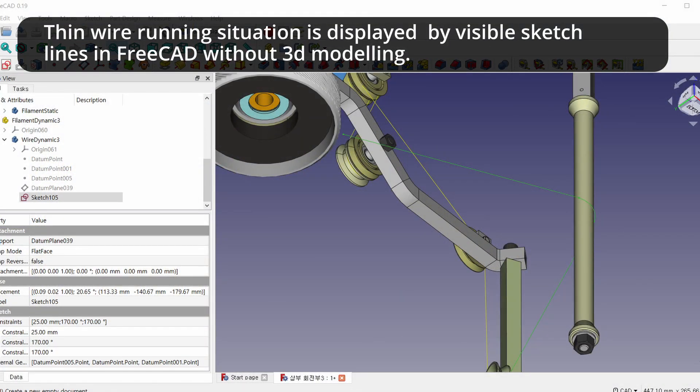Thin wire running situation is displayed by visible sketch lines in FreeCAD, without 3D modeling.